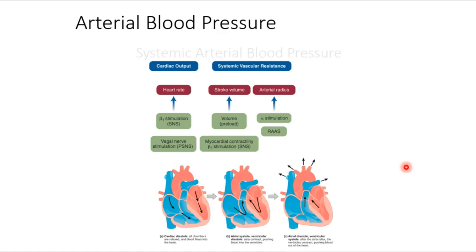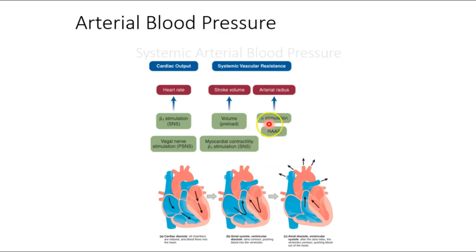Lots of things control your blood pressure. Blood pressure is determined by cardiac output and systemic vascular resistance. Cardiac output is determined by heart rate and stroke volume. Systemic vascular resistance is determined by arterial radius as well as vasoconstriction. You also have the RAAS pathway — renin-angiotensin-aldosterone system. How do you feel about that?